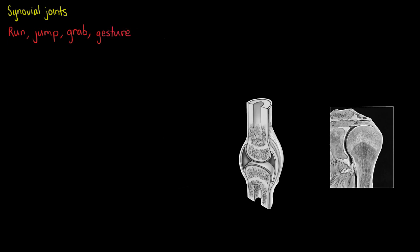Joints, otherwise known as articulations, are points in the body where two or more bones meet and usually allow for movement, but not always. Before we begin describing synovial joints, we'll just familiarize ourselves with a few basic terms that refer to joints' ability to allow movement.